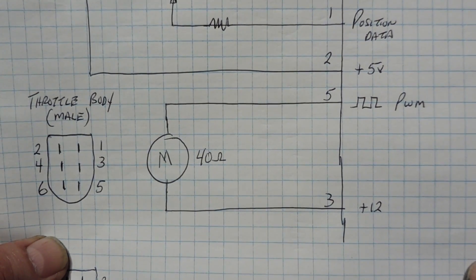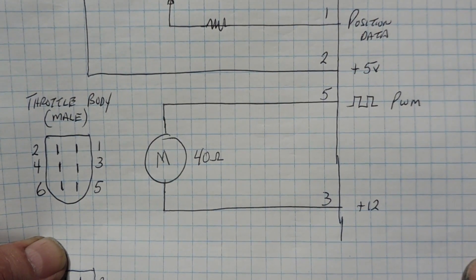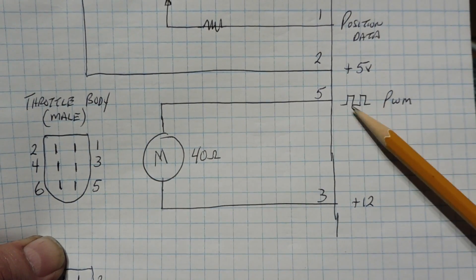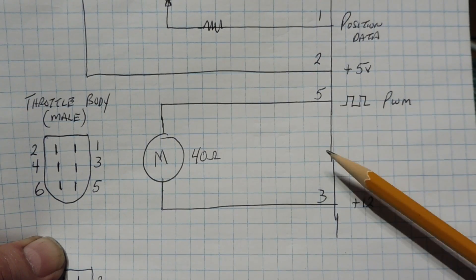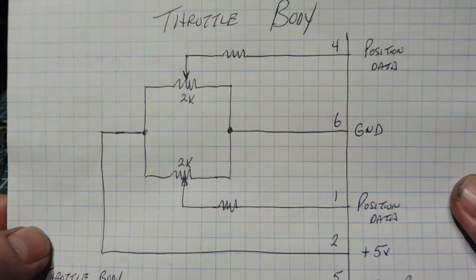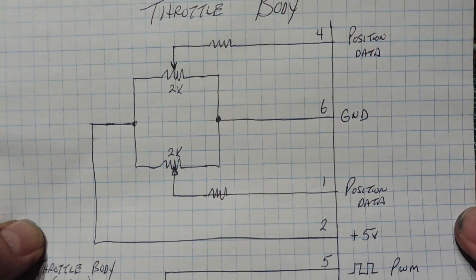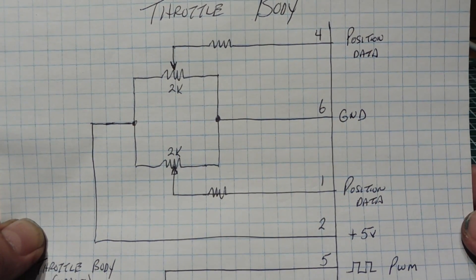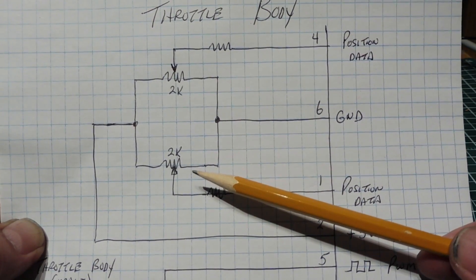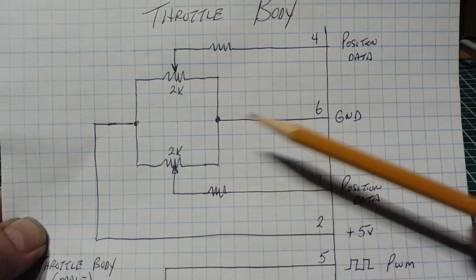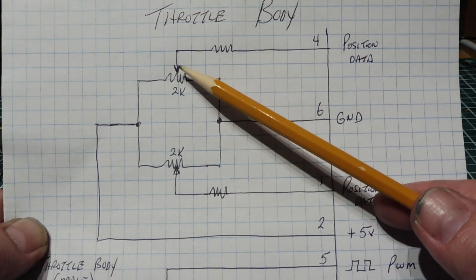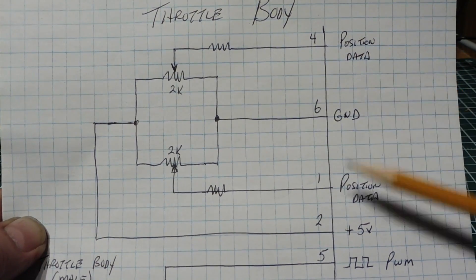Here's the schematic diagram of the throttle body, and it's fairly simple. Here's the motor — this is where we drive the PWM signal to open and close the butterfly valve — and here are our throttle position sensor feedback potentiometers, which give back feedback data of the butterfly valve position. We're using two potentiometers for redundancy in case one fails, and we're feeding 5 volts across both pots, so we get 0 to 5 volts out of the wiper on each pot for the position data.